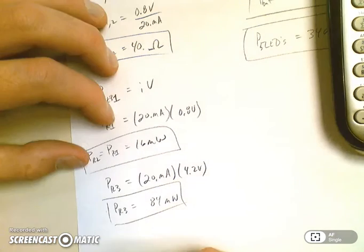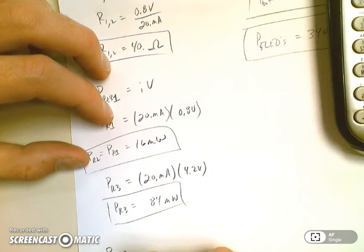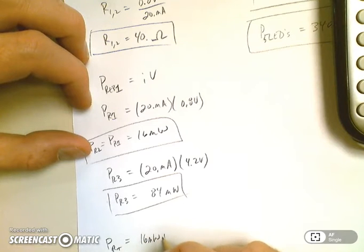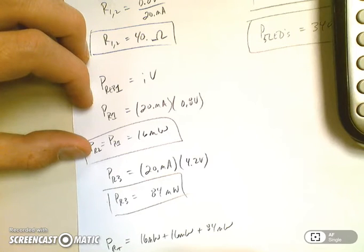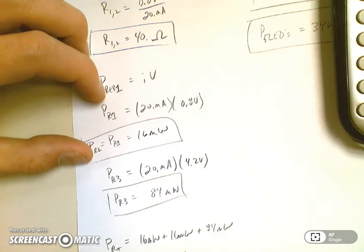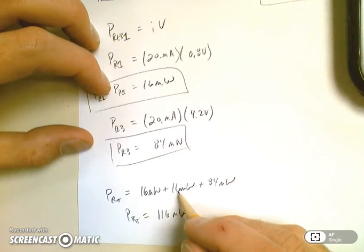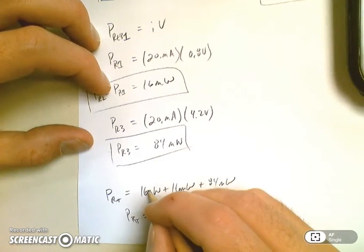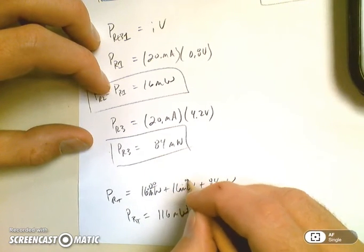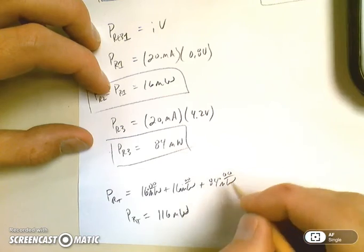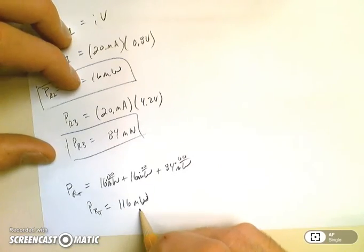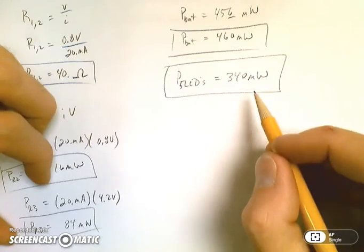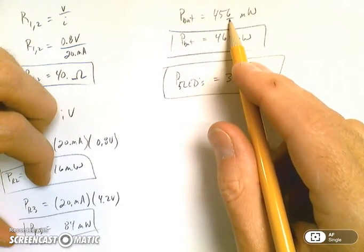So what is the total resistance power? That's going to be 16 milliwatts plus 16 milliwatts plus 84 milliwatts. So the resistance power total is going to be 116 milliwatts. And again, these numbers should add up. We've got 116 plus 340 and that gives us my 456, which is perfect.